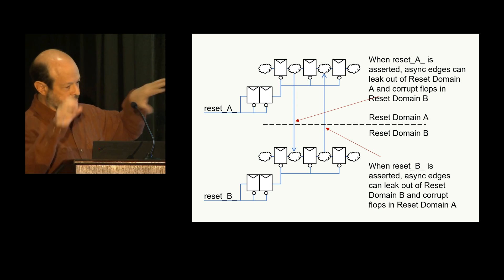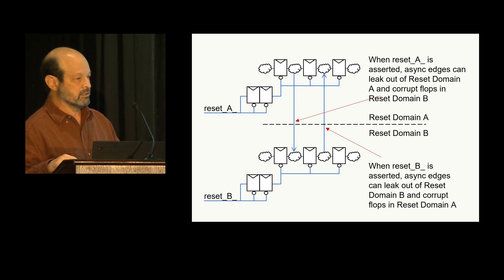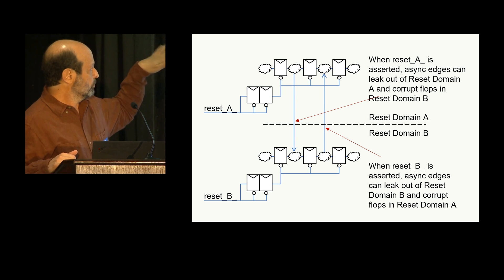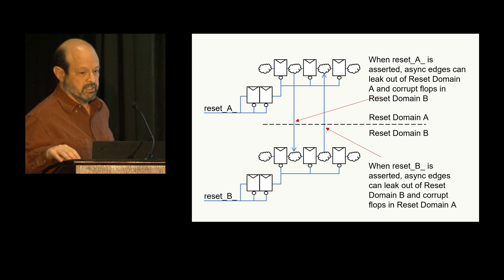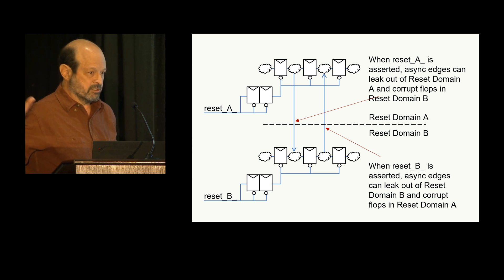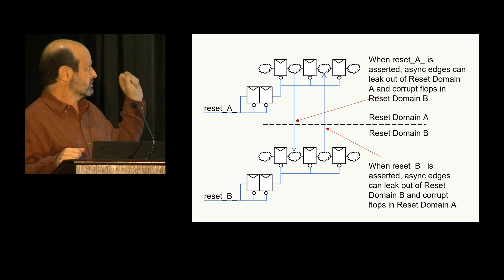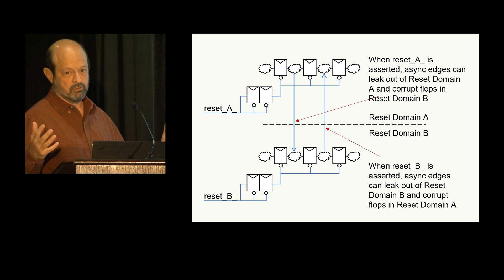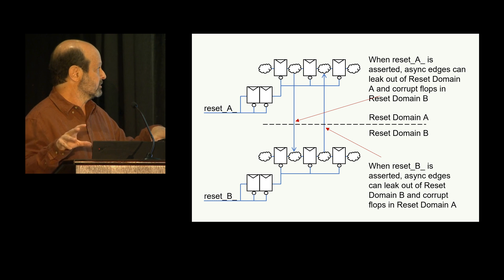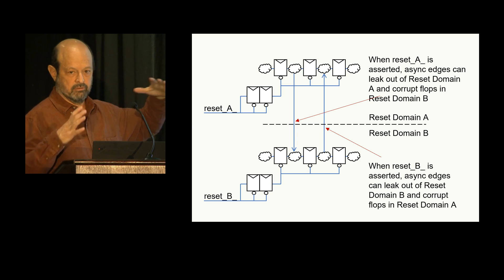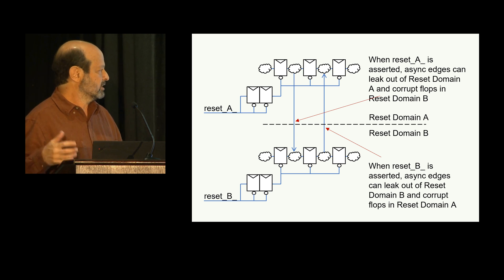In a chip with hundreds of these little domains, the assert edge of reset is actually really dangerous. You assert it, all those flops are pushed into their state, but there's a crazy explosion — compared to CDC, a crazy explosion of asynchronous edges that are just everywhere in your design. Every flop is sending out these async edges. If they hit any downstream flop that's not already being reset or clocked, you get more async edges. And ultimately, the danger is leaking out of your block that you intended to reset.